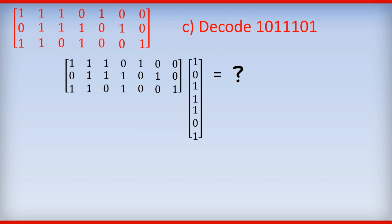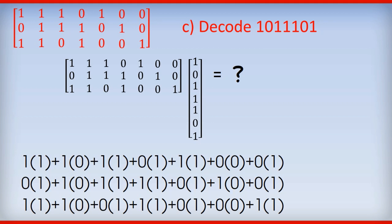Okay, on to part C. Decode 1, 0, 1, 1, 1, 0, 1. You can be pretty sure with these sort of questions that if there's two parts of decoding, one of them is going to have an error. So that's my bet. Let's see what happens here. Okay, so as we did in part B, we multiply the matrix by the seven digit number. And you can see the three equations down the bottom. And this time we get 3 and 2 and 3, and 3 is 1, 2 is 0. So the numbers end up being 1, 0, 1. So at this stage we know that there is an error. The question is, where is the error?